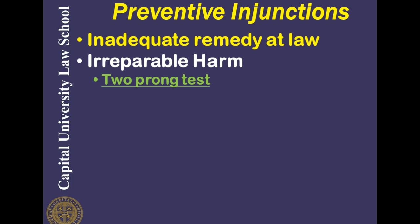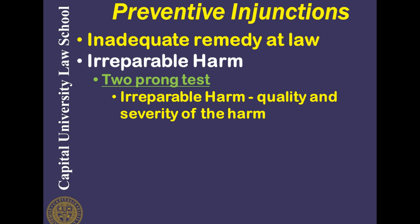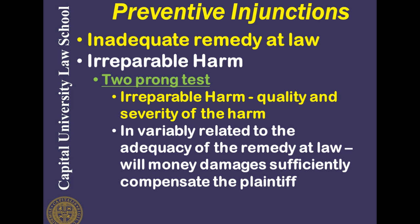The second part of this two-pronged discussion is whether there is irreparable harm. This involves the quality and severity of the harm. The plaintiff must show that they will suffer irreparable harm if the injunction is not issued. The suffering of irreparable harm is clearly tied to the adequacy of the remedy at law. If money damages will sufficiently compensate the plaintiff, most courts will find that there is no irreparable harm, because when the money damages are paid the plaintiff is made whole. If money damages are not sufficient, then there is no adequate remedy at law, and courts will find that the plaintiff has been irreparably harmed.